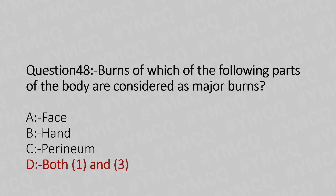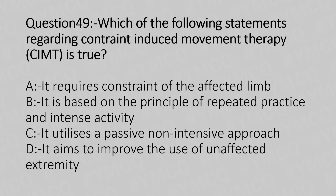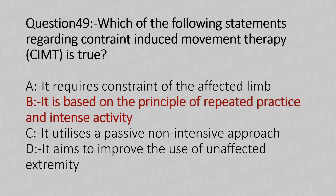Now let's move to question number 49. Which of the following statements regarding constraint-induced movement therapy is true? Option A, it requires constraint of the affected limb. Option B, it is based on the principle of repeated practice and intense activity. Option C, it utilizes a passive non-intensive approach. Option D, it aims to improve the use of the unaffected extremity. And the answer is Option B, it is based on the principle of repeated practice and intense activity.